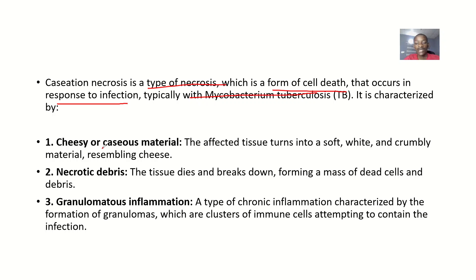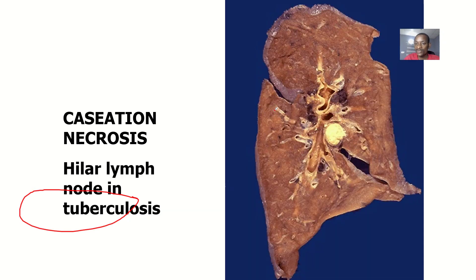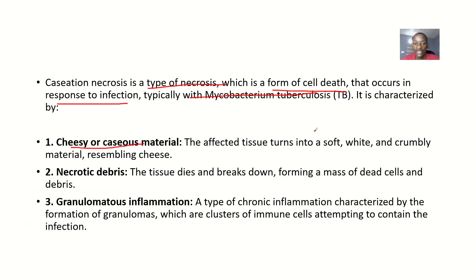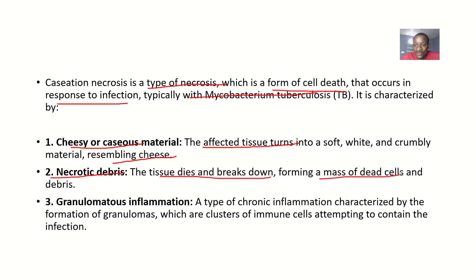The characteristics of caseous necrosis include a cheesy or caseous material — the affected tissue turns into soft, white, or crumbly material resembling cheese. There is also necrotic debris, meaning the tissue dies and breaks down, forming a mass of dead cells and debris.